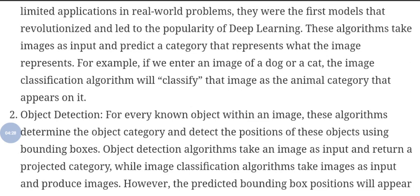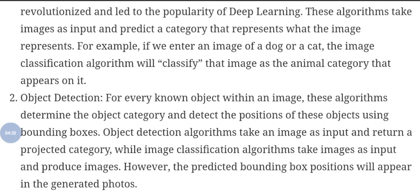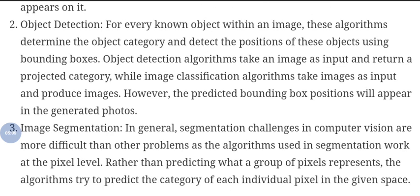The second type is object detection. For every known object within an image, this algorithm determines the object category and detects the positions of objects using bounding boxes. Object detection algorithms take an image as input and return a predicted category along with bounding box positions that appear on the image.